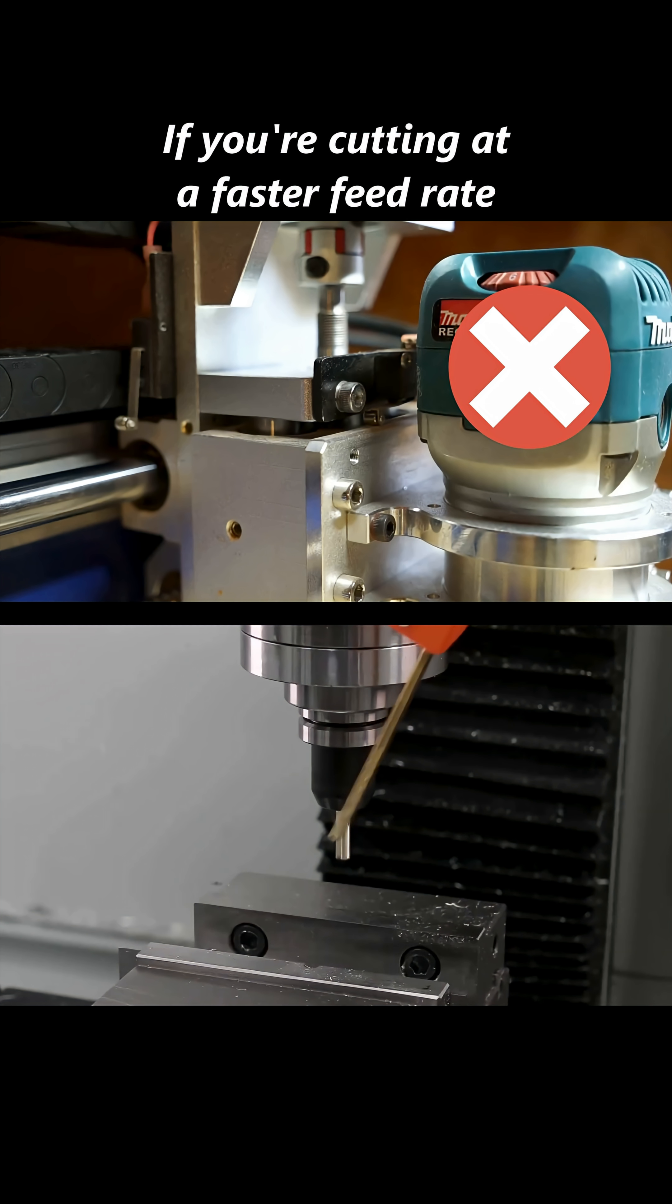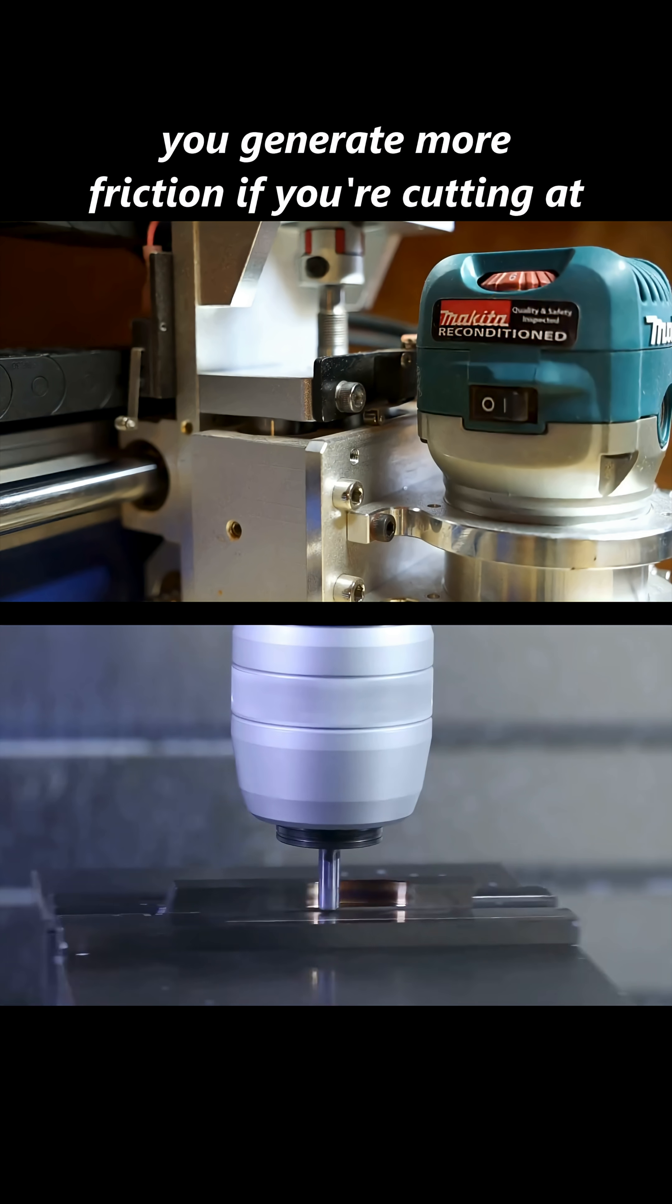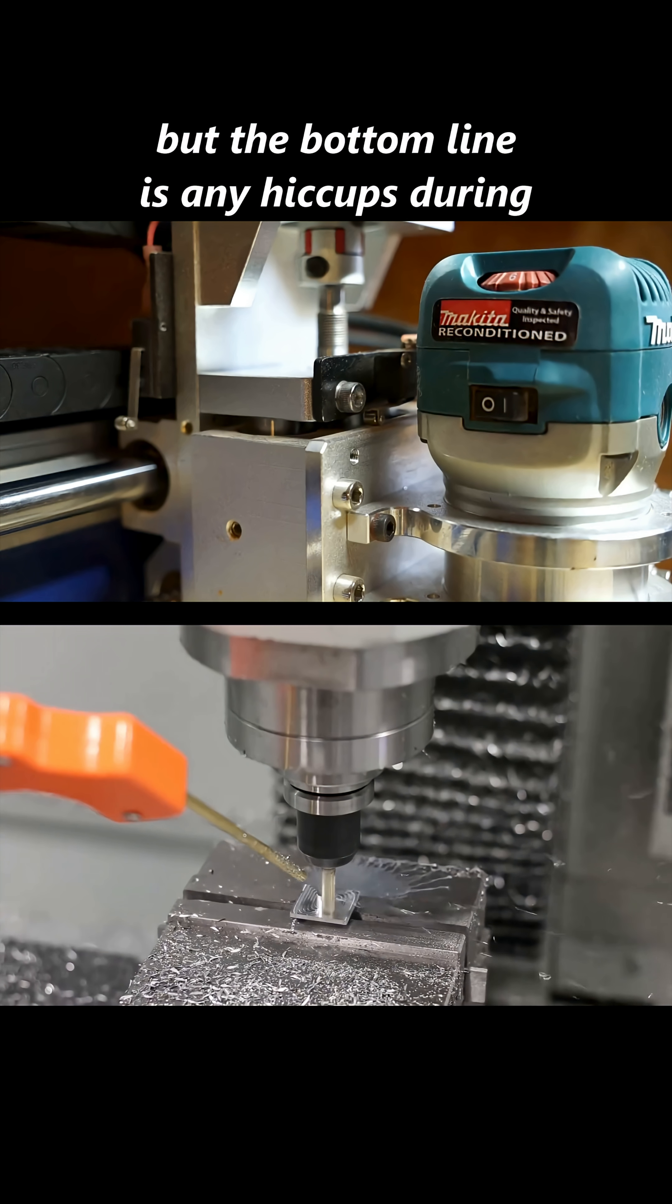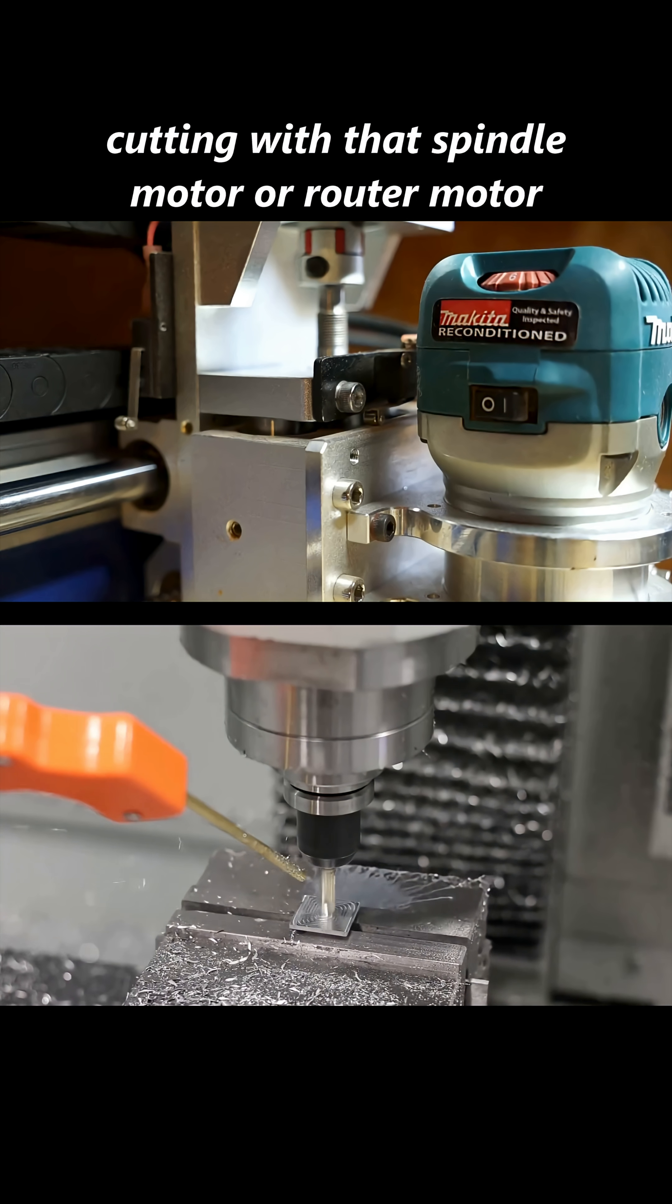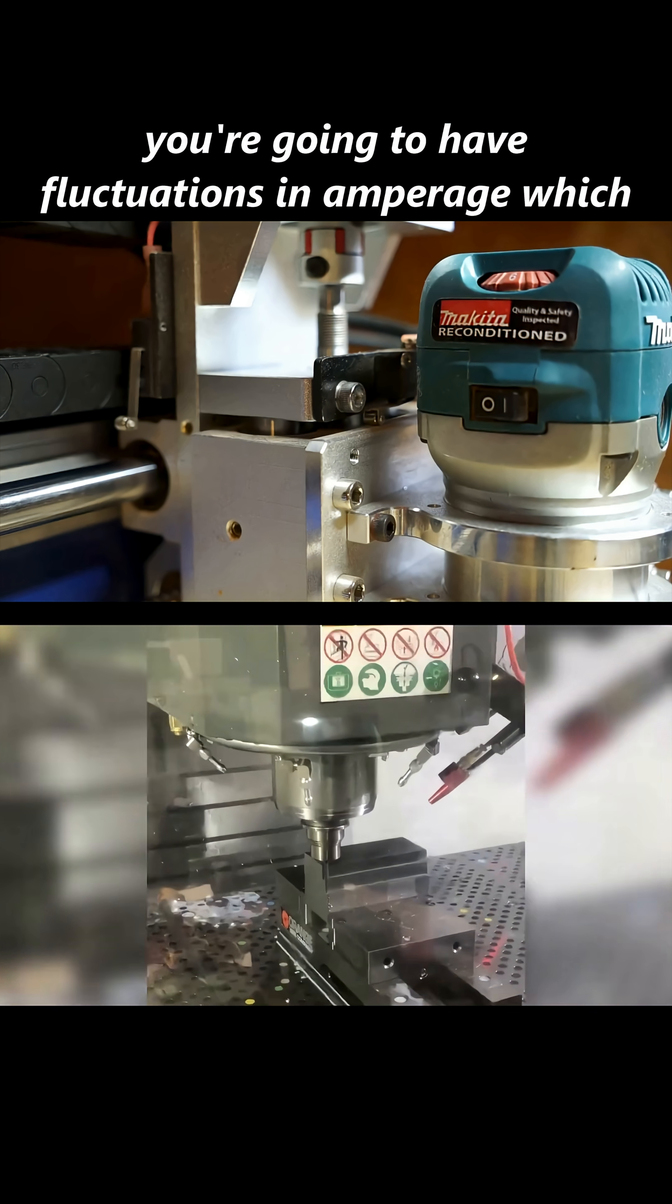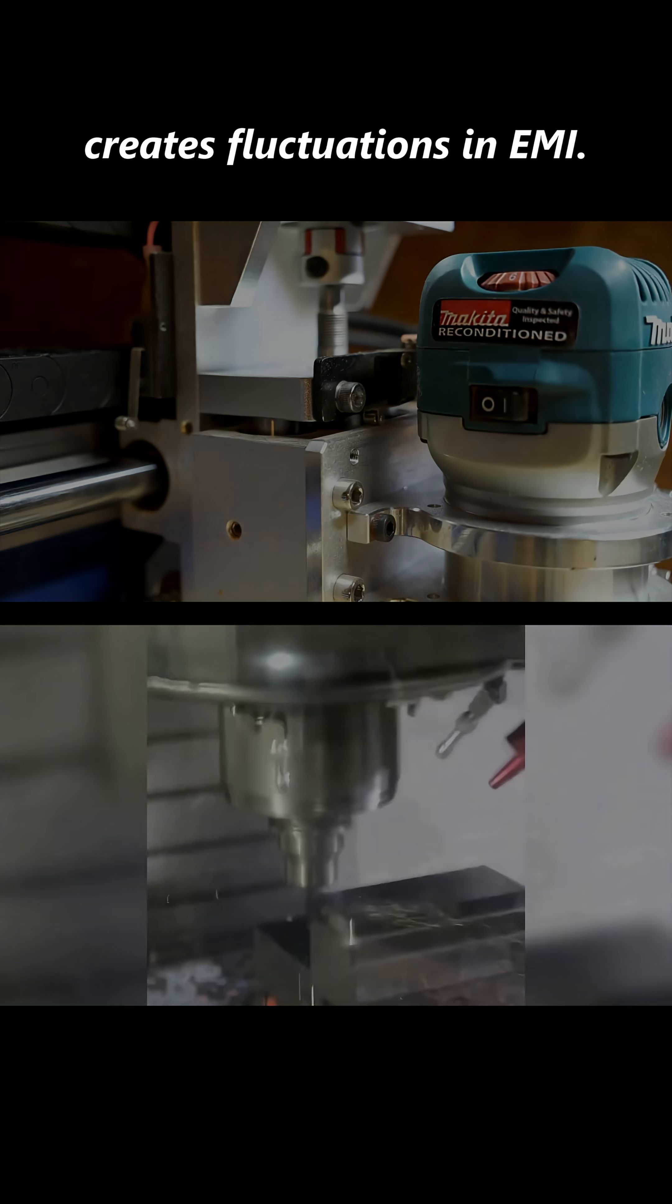If you're cutting at a faster feed rate, you generate more friction. If you're cutting at a lower feed rate, you generate less friction. But the bottom line is, any hiccups during cutting with that spindle motor or router motor, you're going to have fluctuations in amperage, which creates fluctuations in EMI.